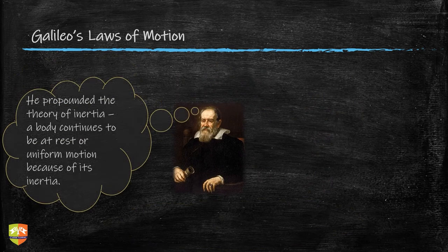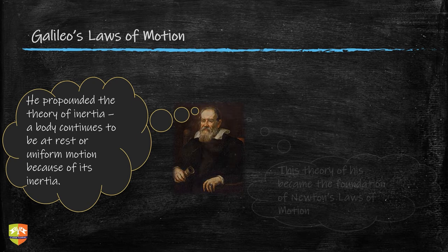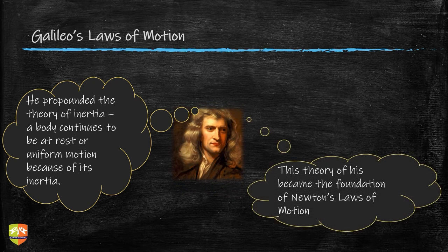Galileo proposed his own ideas and put forward the theory of inertia, which we now know as Newton's first law of motion. He said that a body continues to be at rest or in uniform motion because of its inertia — there is something called inertia which keeps a body in that state. This theory became the foundation of Newton's laws of motion. Anything at rest continues at rest, and anything in uniform motion continues in uniform motion, until an unbalanced external force acts on it.